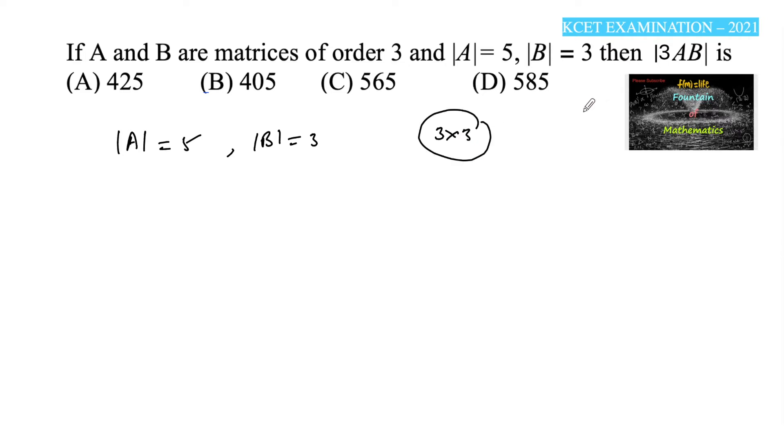Then find 3 times the determinant of 3AB. Since we know that if A is a square matrix of order n, then the determinant of kA, where k is a scalar constant, is equal to k to the power of n times the determinant of A.